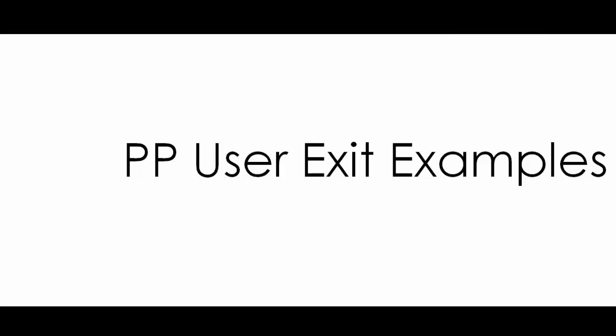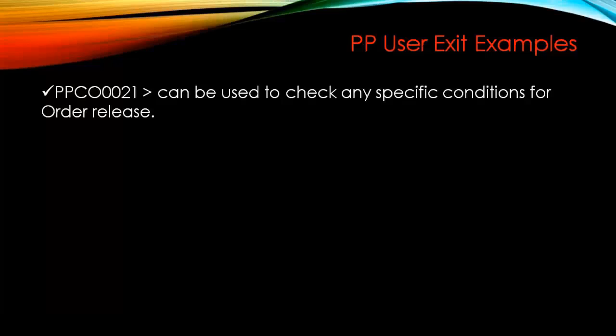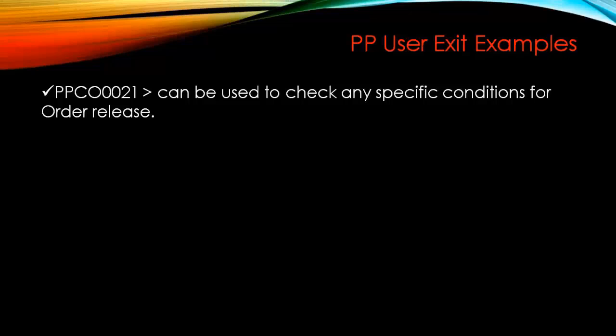There are a few examples of user exits. For example, user exit PPC00021 — you do not need to remember this number, it is just for general understanding. This user exit can be used to check a specific condition for order release. For example, when the business wants to check extra functionality when releasing the order, the ABAP consultant can implement this exit. One example is checking whether a material is blocked when you release the order.